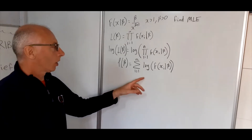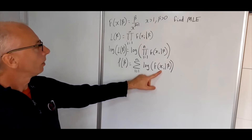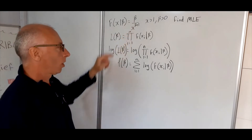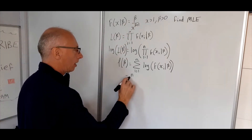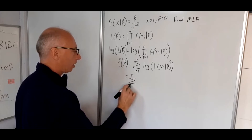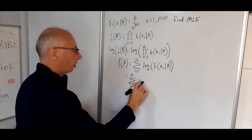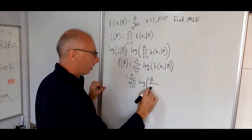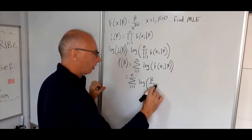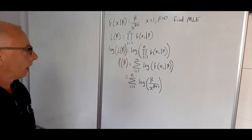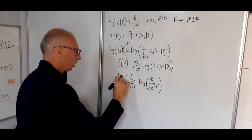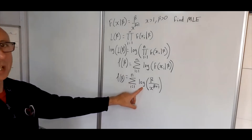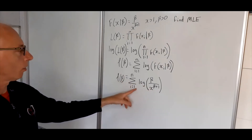Now we substitute in our PDF. That is β over x to the β plus 1. So we get the summation from i equals 1 to n of the log of β over xᵢ to the β plus 1. We'll take the log of this and sum it all up for all n observations.